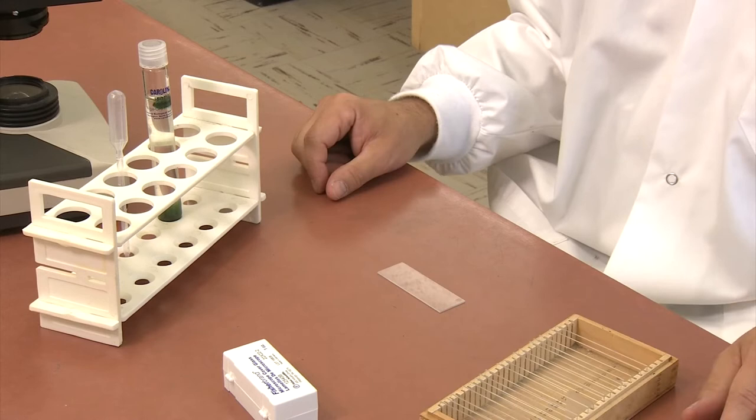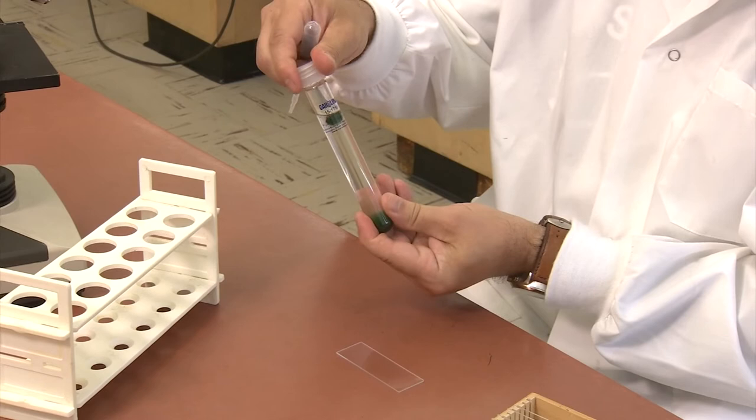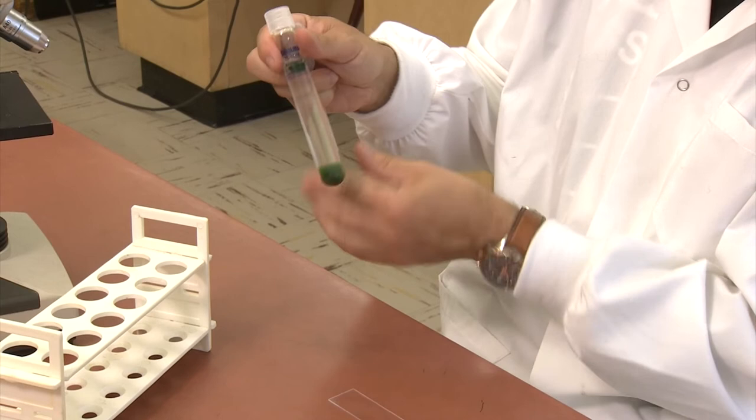Use the plastic pipette to obtain anabina. You will only need a few drops, so don't fill the pipette. You may have to shake the tube of anabina if you notice that they have settled to the bottom of the tube.